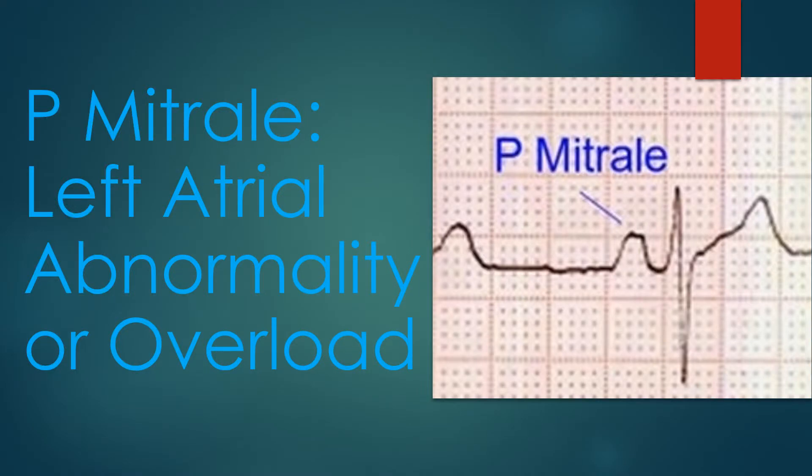Normal P wave has a width of up to 2.5 mm or duration of 100 ms. When the P wave widens, it is due to left atrial enlargement.